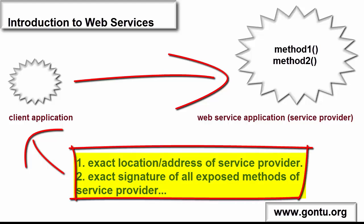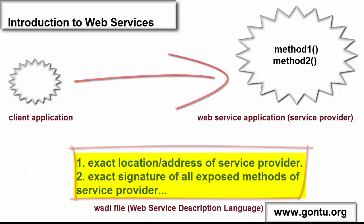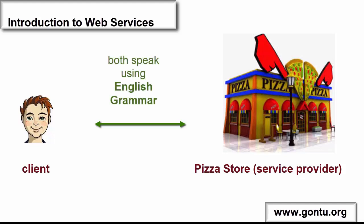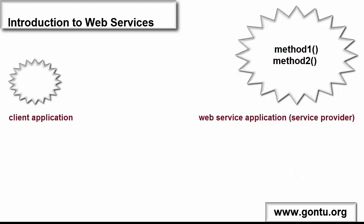This file which contains all basic information of a specific web service application is very popularly known as WSDL — Web Service Description Language. In a real-life analogy, both the client and the pizza store guy make sure that when they communicate over phone, they both speak in a language and format which both can understand — let's say both agree to communicate in English using English grammar format.